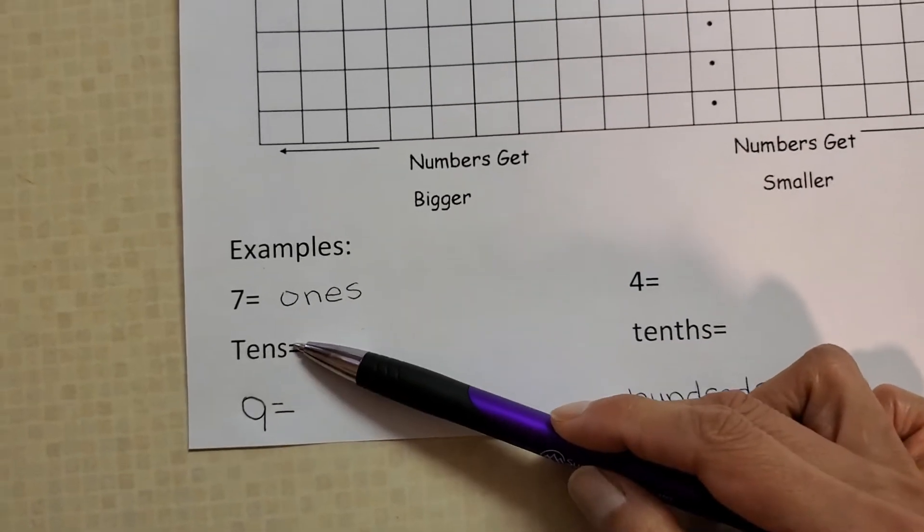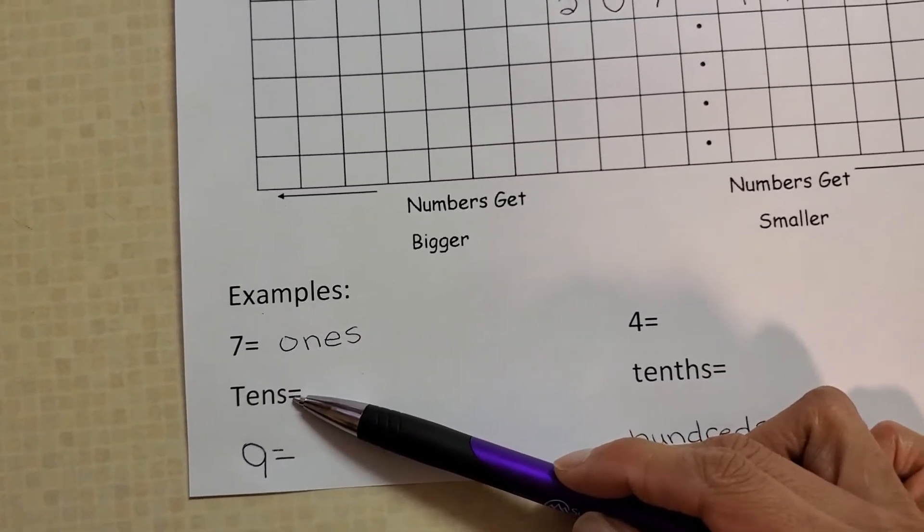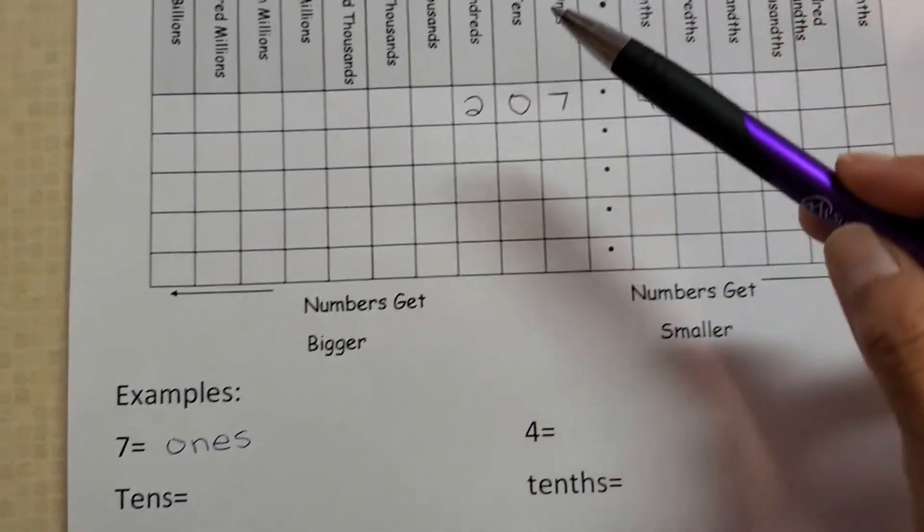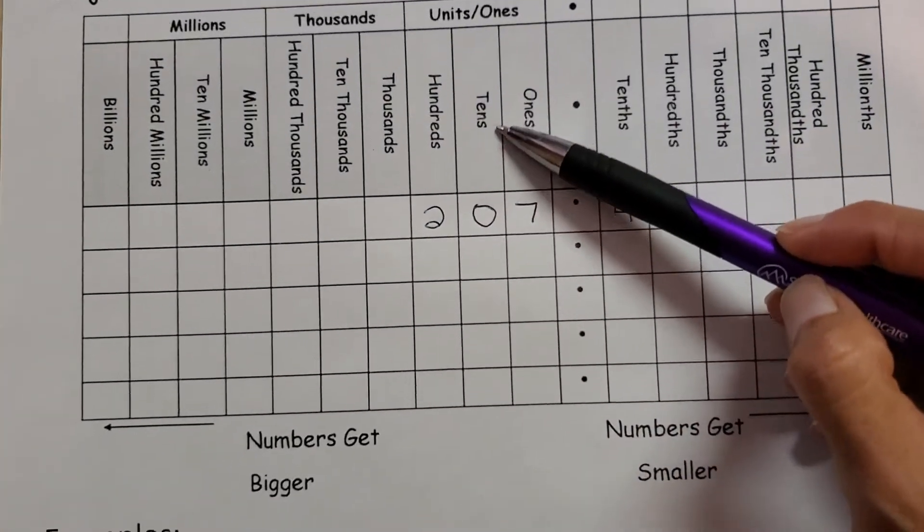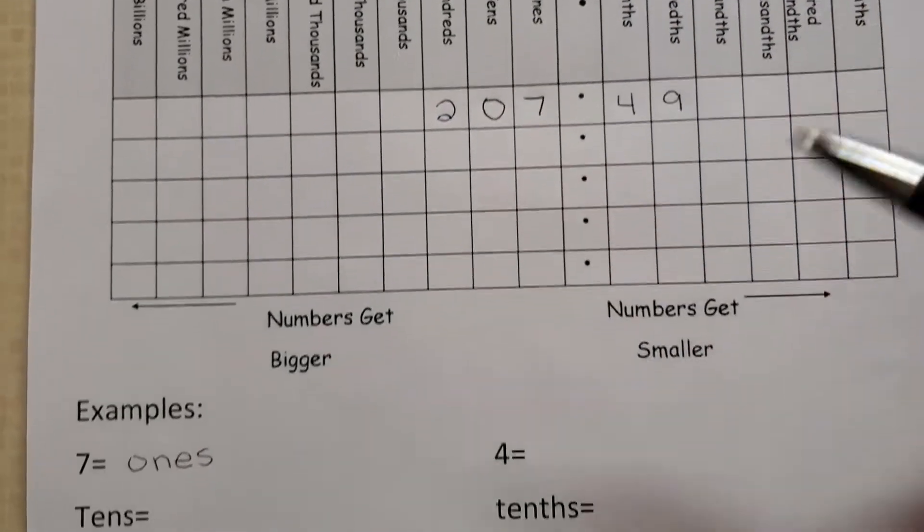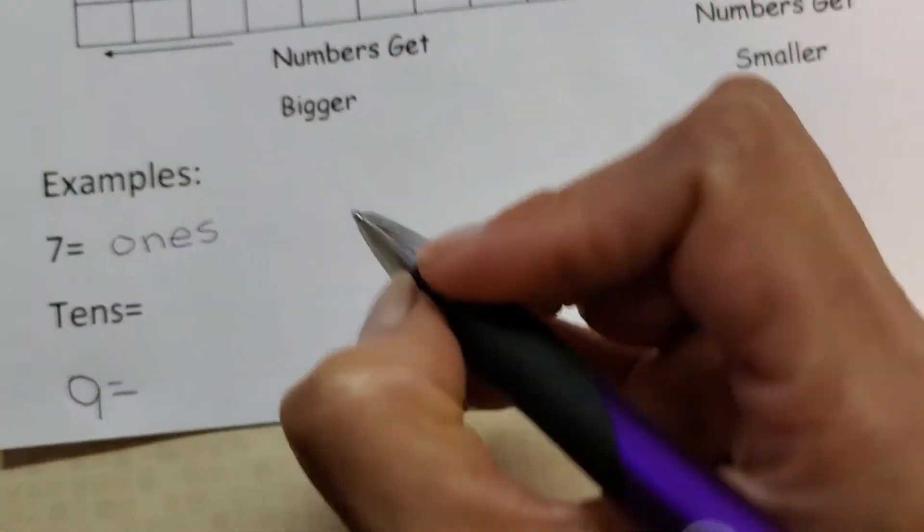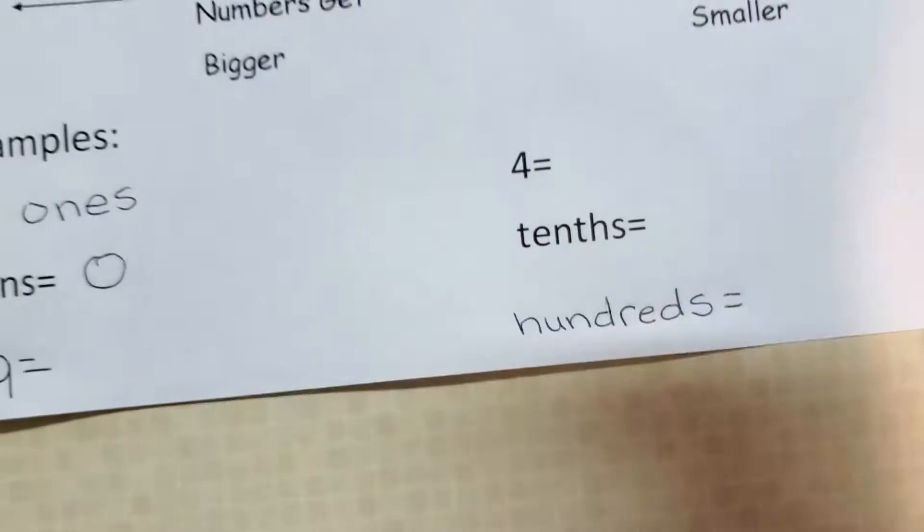Now I want to know what number is in the tens position. So take a look up here. Tens. Here's tens. Zero is in the tens position. So the number is zero.